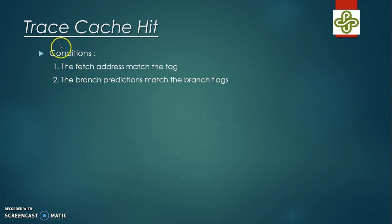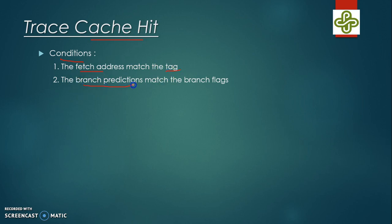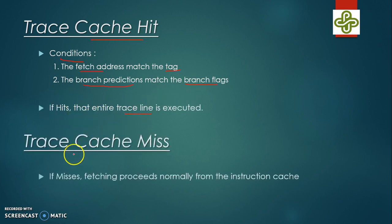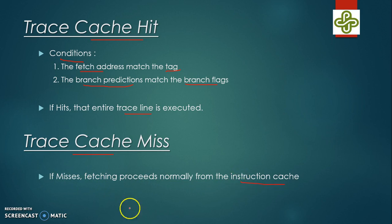What are the conditions for a trace cache hit? First, the fetch address must match the tag address. Second, the branch prediction must match the branch flags. If it hits, the entire trace line is executed. If it misses, fetching proceeds normally from the instruction cache.